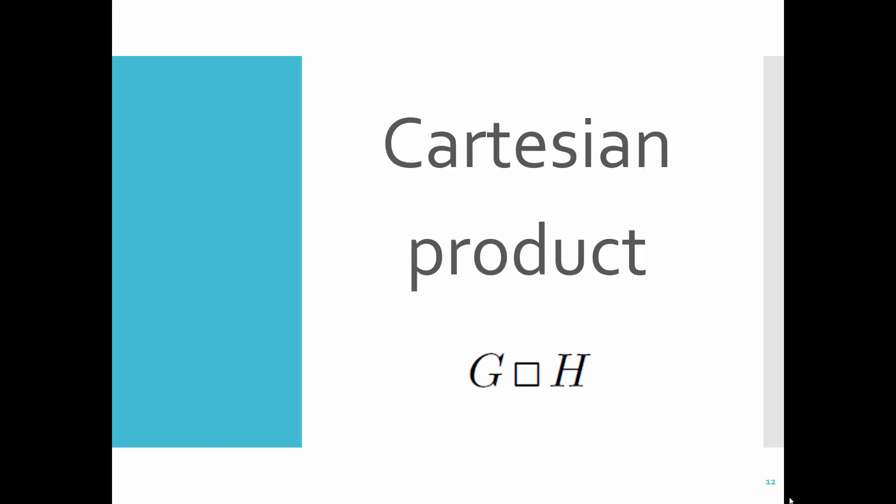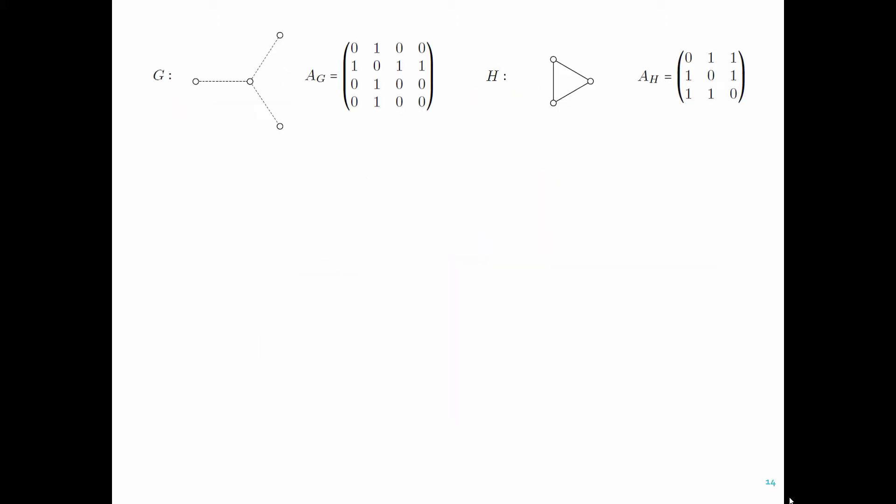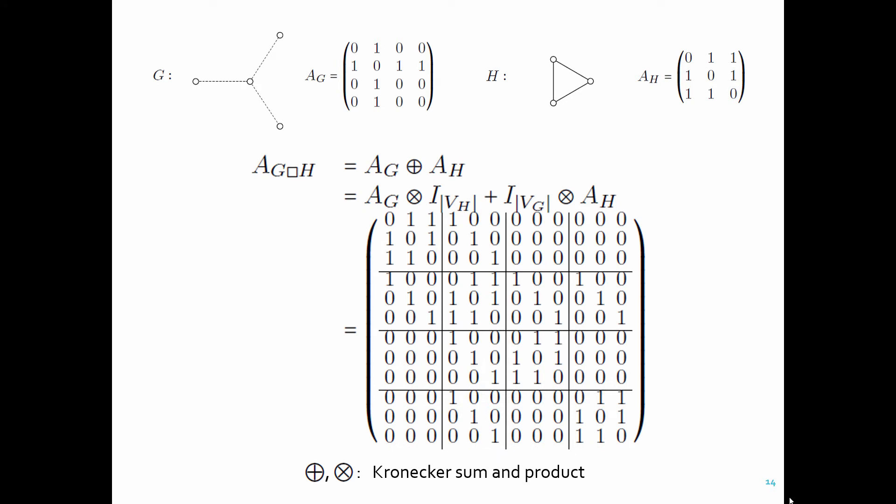The first one, a Cartesian product of two networks, is the most straightforward way to define a graph product. You keep one of the original factor networks in each layer, and connect its node to itself in other layers, following the pattern given by the other factor network. This operation can be written down mathematically using the Kronecker sum of two adjacent matrices, but I am not going to get into the details of math in this talk.